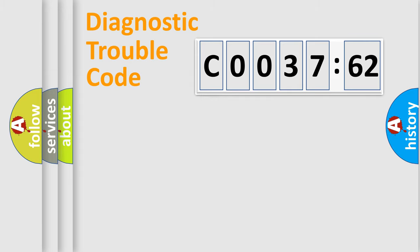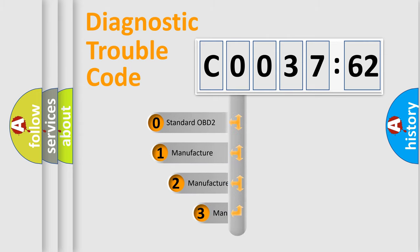Powertrain, Body, Chassis, Network. This distribution is defined in the first character code.